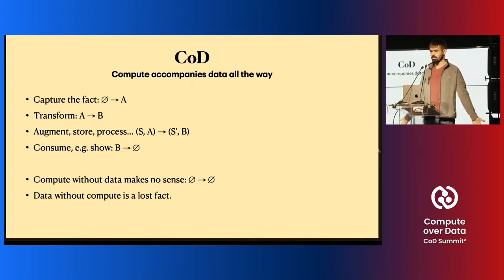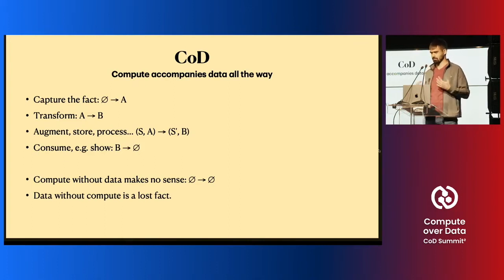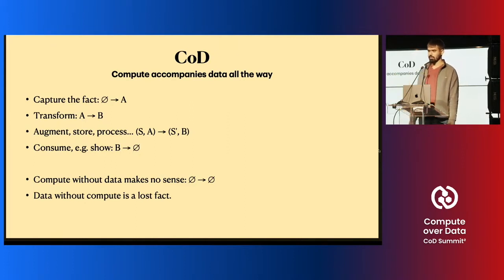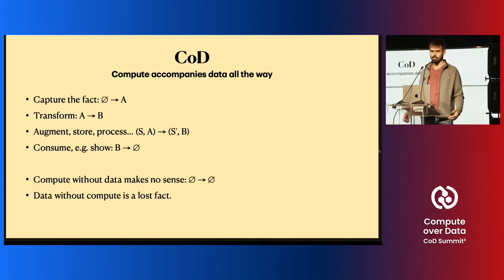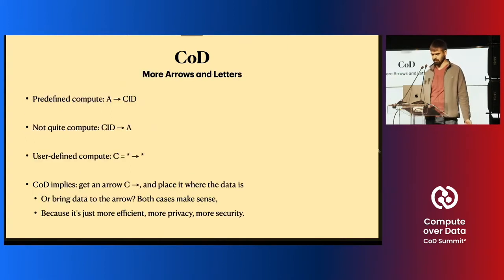To finalize the life cycle of the data, we need to consume it — for example, to show it. We have some kind of sinks for the data, where you provide data as an argument and have nothing inside the system out of it, but you have some effect, for example, something shown on the display. There is no way to compute without data — it makes absolutely no sense. And data without compute is the lost fact: it happened, but isn't even stored. So it's just lost.